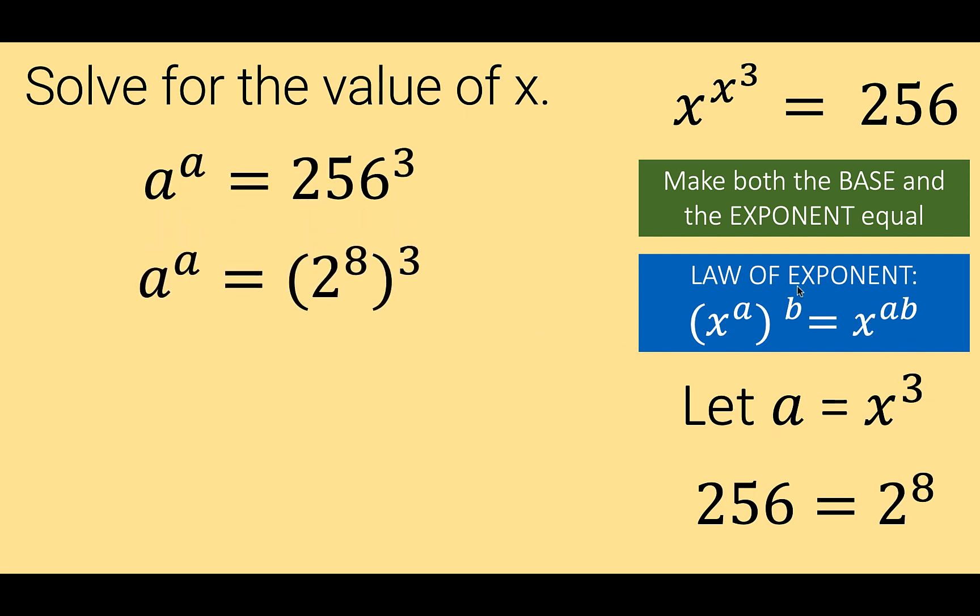Then remember again that by this law of exponent, because multiplication is commutative, you can interchange a and b. That means you can also interchange this exponent 8 and 3 to have this form. Notice that 8 and 3 are interchanged.